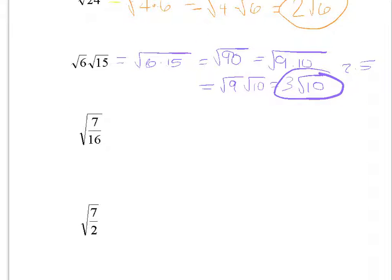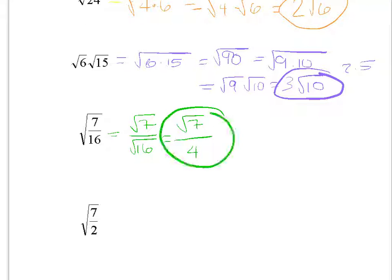The next one has a fraction inside the square root—that breaks rule 3—so split it into the square root of 7 on top over the square root of 16 on bottom. The square root of 16 is 4, giving square root of 7 over 4. Checking all three rules: 7 is prime, no perfect squares inside; no square root in the denominator; no fraction in the square root. Done—this is the answer.